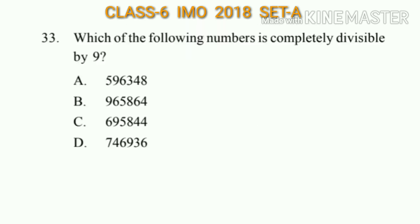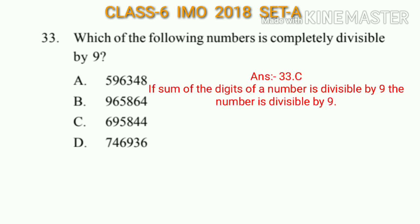Question number 33: Which of the following numbers is completely divisible by 9? If the sum of the digits of a number is divisible by 9, then the number is divisible by 9. From all the options, the sum of the digits in option C is 36, and 36 is divisible by 9, so that number is divisible by 9.